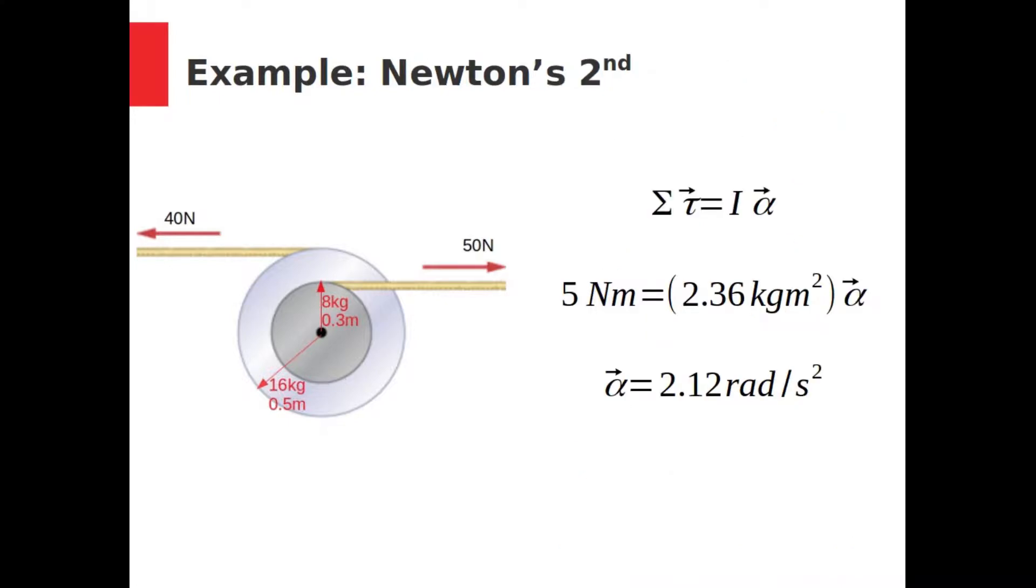Finally, we can apply Newton's second for rotation to determine the angular acceleration. We divide the torque we found earlier, 5 Nm, by the total moment of inertia, 2.36 kg meters squared, to yield the angular acceleration, 2.12 radians per second squared counterclockwise.